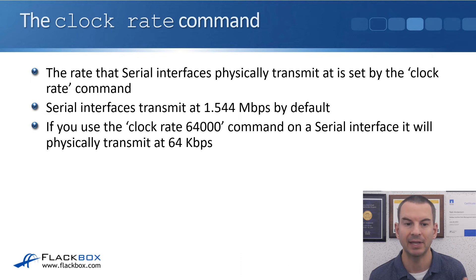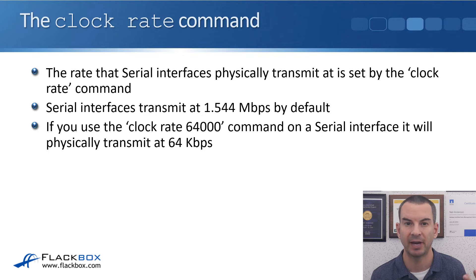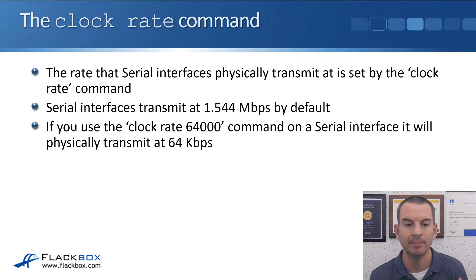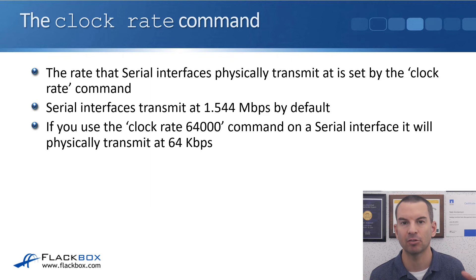Next is the clock rate command, which works on serial interfaces. Serial interfaces used to be very commonly used on WAN links — not so much nowadays, but you do still find them. The rate that serial interfaces physically transmit at is set by the clock rate command. Serial interfaces transmit at 1.544 Mbps by default — that's the speed of a T1 interface commonly used in the United States. If you use the 'clock rate 64000' command on a serial interface, it will physically transmit at 64 kbps. This changes the physical speed of the interface, and it has to match on both sides of the link.